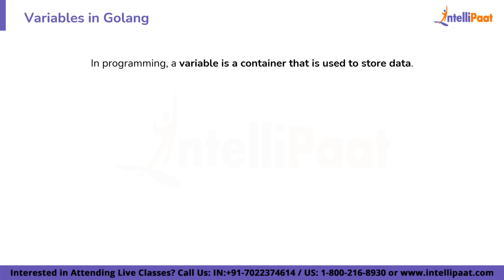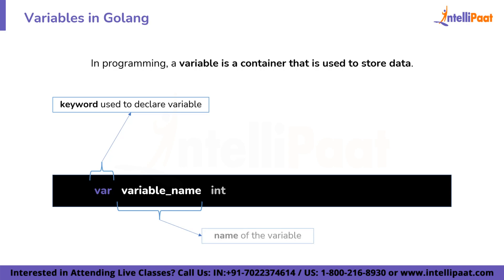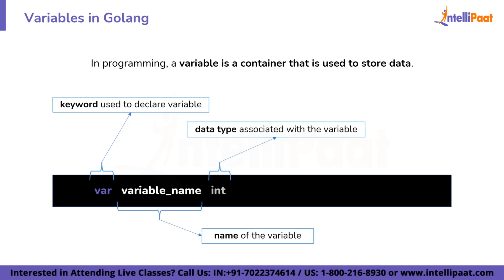If we talk about variables and constants in any programming language, the working and their use remains the same across all programming languages. The only thing that changes is the syntax, along with some additional rules for that particular language. Variables are essentially containers or temporary databases used to store data. In Go language, we start with the var keyword to declare a variable, followed by the variable name and then the data type associated with that variable.